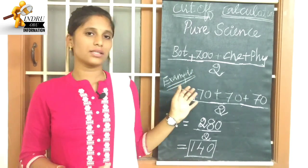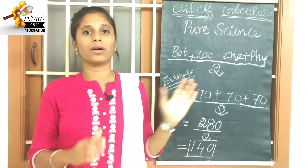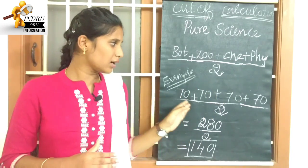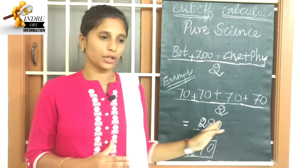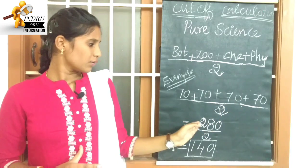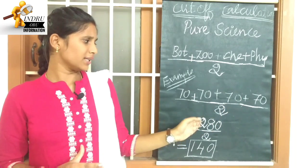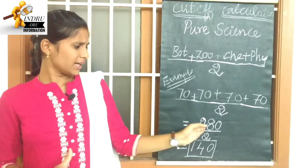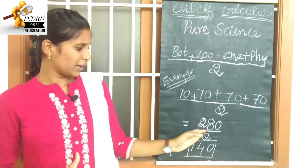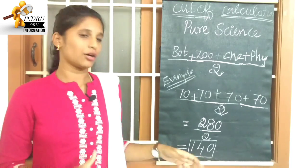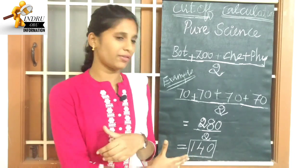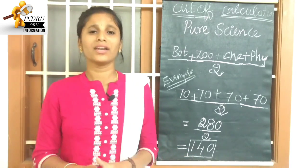Now, approximately, you can score 70 marks in each of the 4 subjects. The total marks for the 4 subjects comes to 280. The cut-off total is 240. Out of 200, 140 is the cut-off.